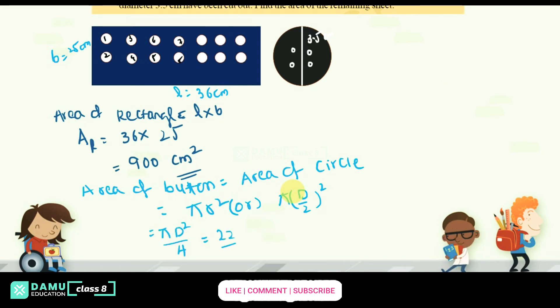So pi is what is that? 22 by 7 into D is what? 3.5 whole square, whole divided by 4. So 2 2s are 4, 2 11s are. Then what you will get here is area of 11 into 3.5 into 3.5 whole divided with 7 into 2. So 7 1s are 7, 0.5, so 7 5, so 35.